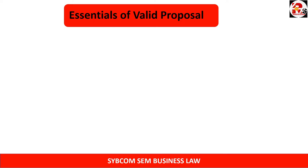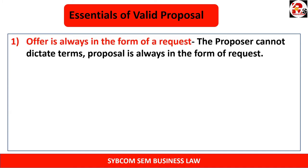Now we will read the essentials of a valid proposal. First, offer is always in the form of a request. When I give you a proposal to sell my bike, that is a request. I cannot force you or involve misrepresentation, undue influence, or coercion. If I take someone's agreement by threatening them, that is coercion, and such contracts are void contracts. The proposal cannot dictate terms.